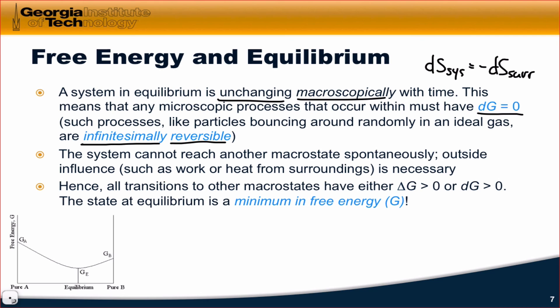Since the system can't reach another different macrostate spontaneously, that indicates that we're at a minimum of free energy in any process to get to any other state. For example, going from a mixture of A and B to pure B requires an uphill climb in free energy or delta G greater than 0.